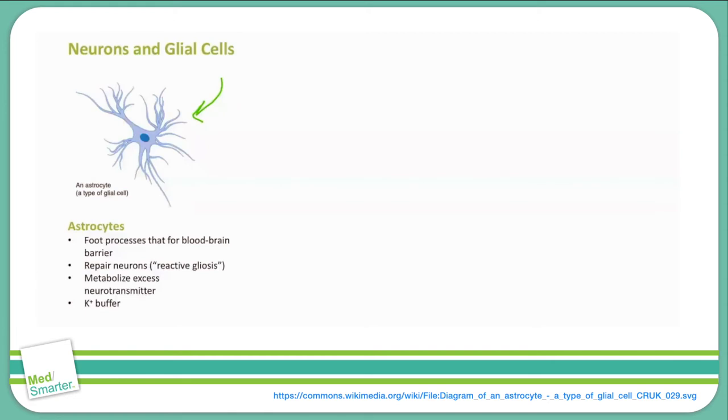One last thing I want to mention about astrocytes is their relationship to glioblastoma multiforme, or GBM. Glioblastoma multiforme is an aggressive malignant CNS tumor that is notoriously difficult to treat. GBMs are tumors of astrocytes. Glioblastoma multiforme has infamously led to the death of several celebrities and political figures, including the late John McCain.